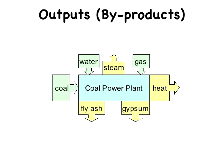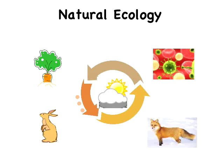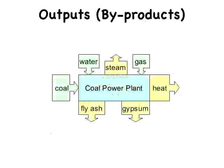Waste, as you know, is a very serious problem because in a sense we're looking at pollution. Now there is no waste or pollution in natural ecology — that's because the waste of one organism becomes the food of another. So is there a way that we can take our waste byproducts in the industrial world and actually make them resources?